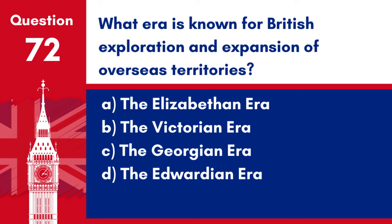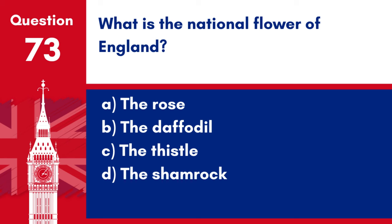Question 72. What era is known for British exploration and expansion of overseas territories? a. The Elizabethan Era. b. The Victorian Era. c. The Georgian Era. d. The Edwardian Era. Answer: a. The Elizabethan Era. The Elizabethan Era, named after Queen Elizabeth I, is known for significant British exploration and the expansion of overseas territories.